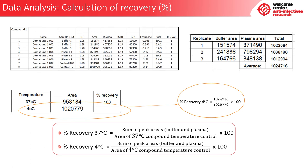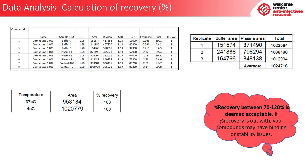Next, do the same for the 4-degree temperature control. Percent recovery at 4°C = (sum of peak areas — both buffer and plasma) / (area of the 4-degree compound temperature control) × 100. For example, percent recovery at 4°C = (average of the total buffer and plasma areas) / (area of the 4-degree temperature control) × 100, giving 100% recovery at 4 degrees. Percent recovery between 70 to 120% is deemed acceptable. If percent recovery is outside this range, your compounds may have binding or stability issues.